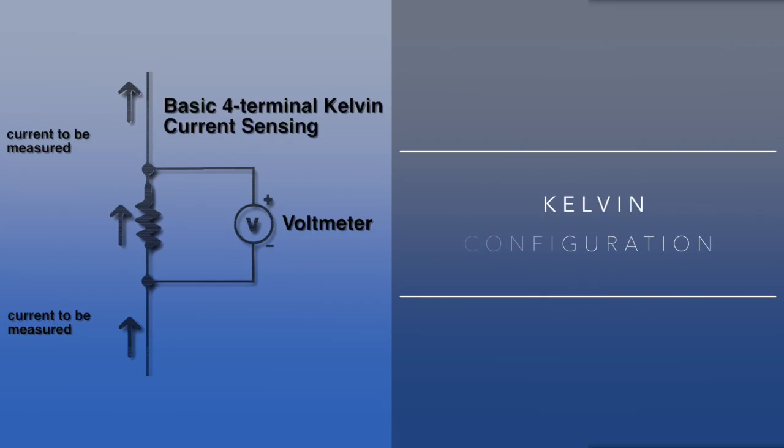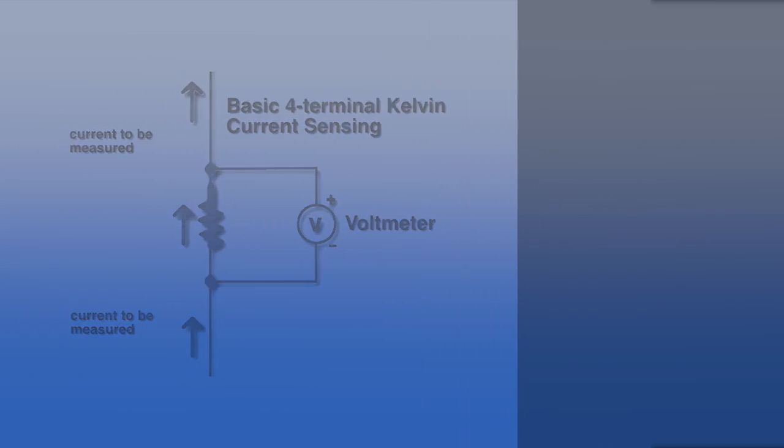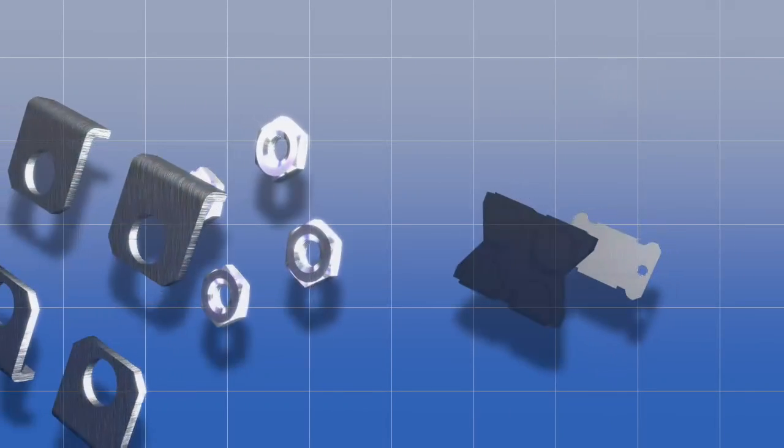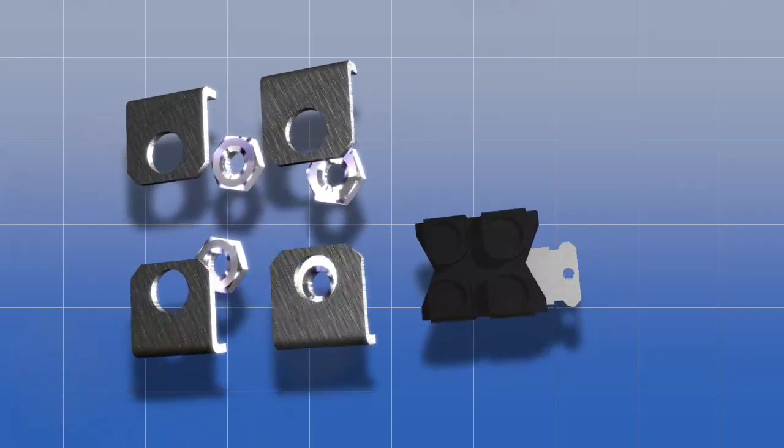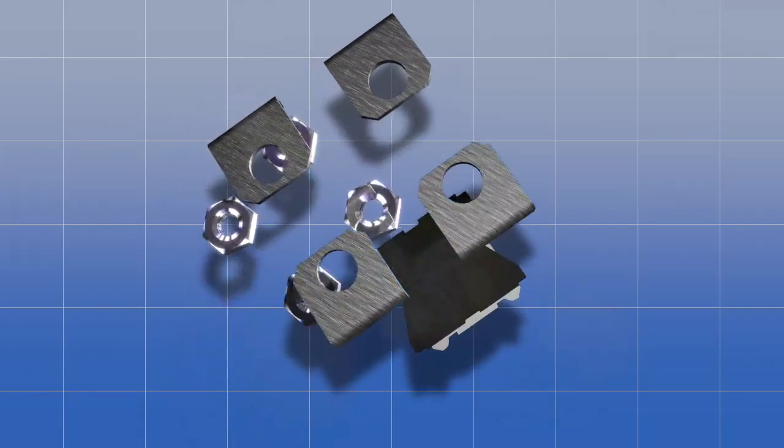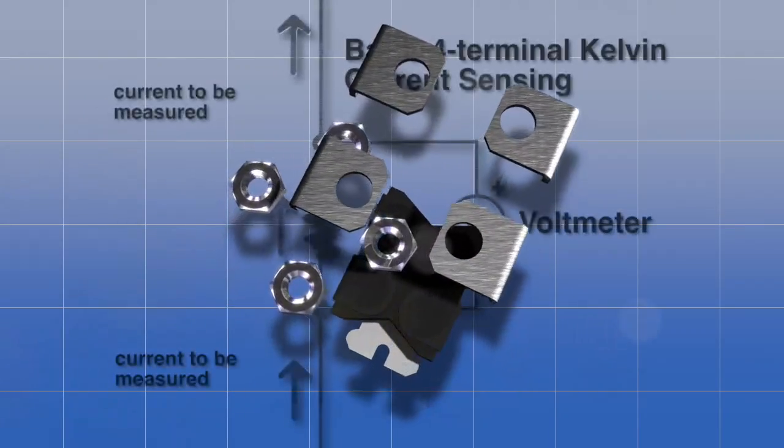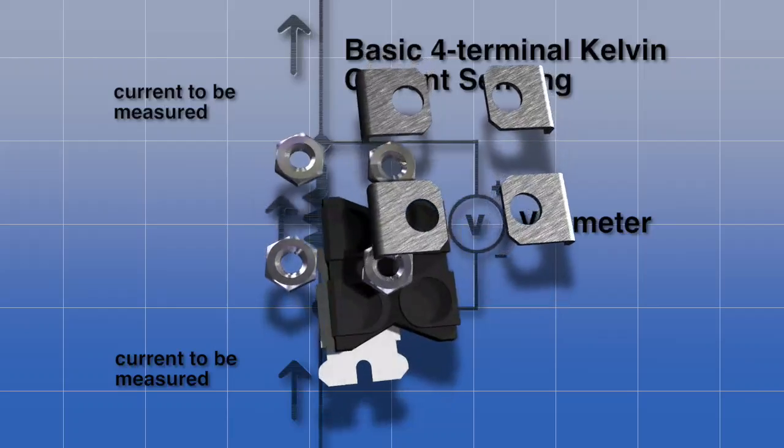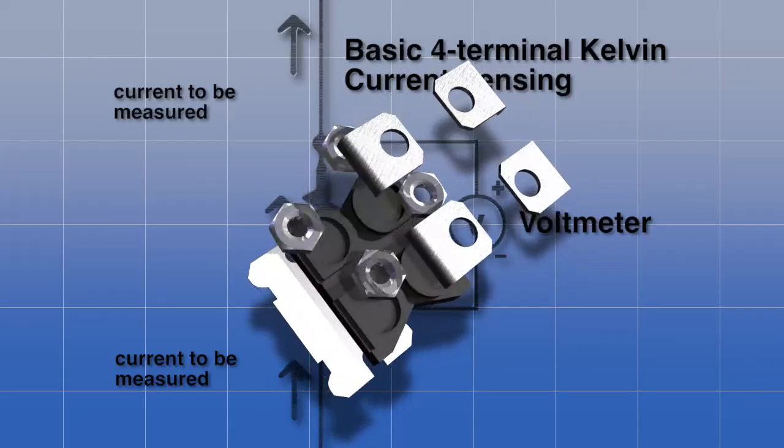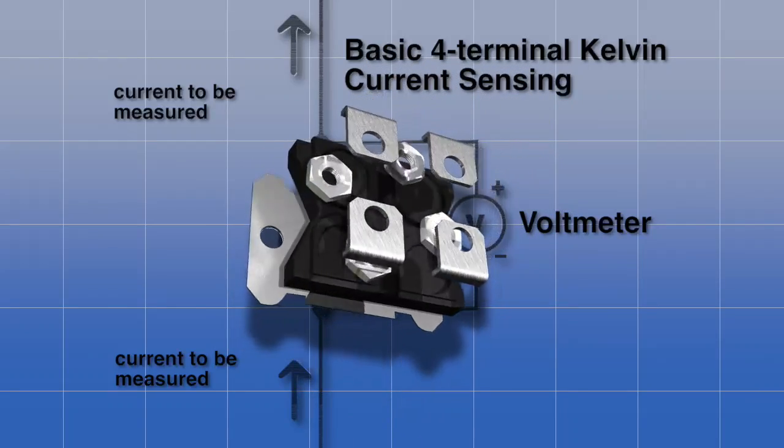One connection that is essential for accurate current sensing and simplified board design is the Kelvin configuration. A Kelvin configuration resistor features four leads or terminations. It enables current to be applied through two opposite leads and the sensing voltage to be measured across the other two leads.